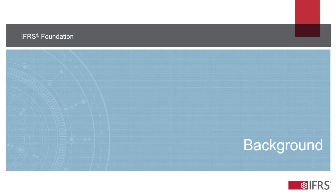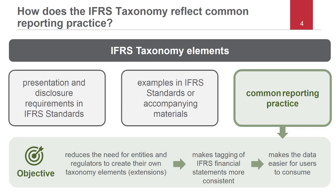Let's start off with some background information. This proposed IFRS taxonomy update is the result of an analysis of common reporting practice. There are three types of elements in the IFRS taxonomy. The first type reflects presentation and disclosure requirements in IFRS standards. The second type reflects examples provided in IFRS standards or accompanying materials. The last type reflects common reporting practice — information not explicitly required by IFRS standards but commonly reported by entities in practice. For each element, we provide a reference indicating whether it is a requirement, an example, or common practice.